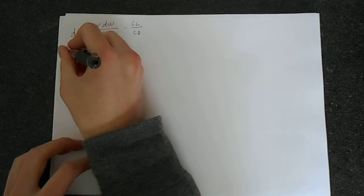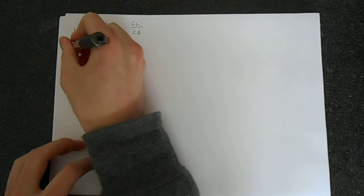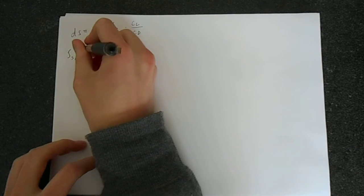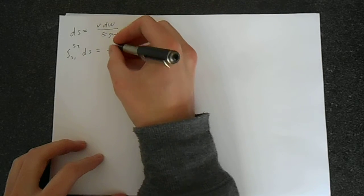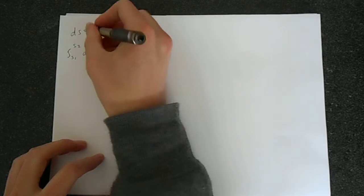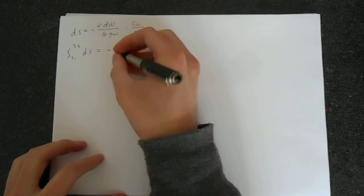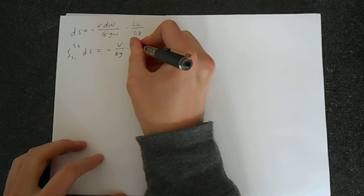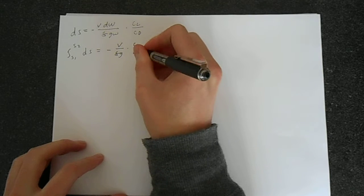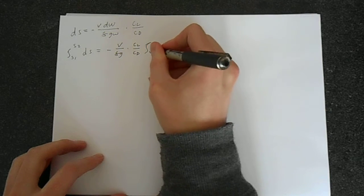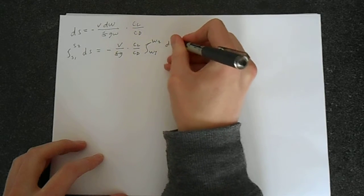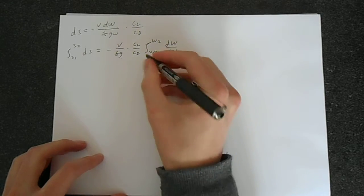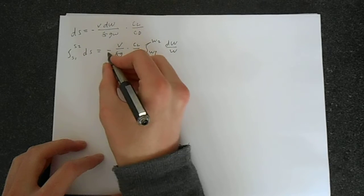Let's go and do this integration. So we can say that the integral from s_1 to s_2 of dS equals minus v - I forgot minus here - v over f g times c_l over c_d, the integral W_1 to W_2 of dW over W. Now we can switch the order of integration and change the sign.